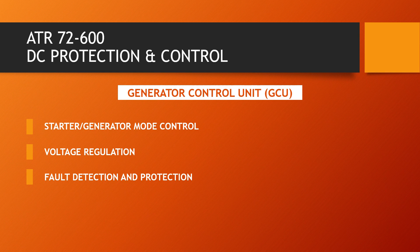Any fault in the electrical circuit is detected by the GCU, alerts are generated, and at the same time it also ensures protection of that circuit by disconnecting electrical supply to the faulty circuit.